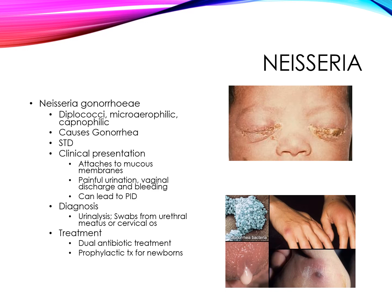Gonorrhea will present with pain or burning during urination and increased discharge. In the female, the cervix is typically the site of infection, so there will be cervical discharge; in the male, discharge from the penis. Females may also see vaginal bleeding between menses. This can also lead to pelvic inflammatory disease, presenting with a tender abdomen and inflammation of the fallopian tubes, and can increase the risk of ectopic pregnancy.